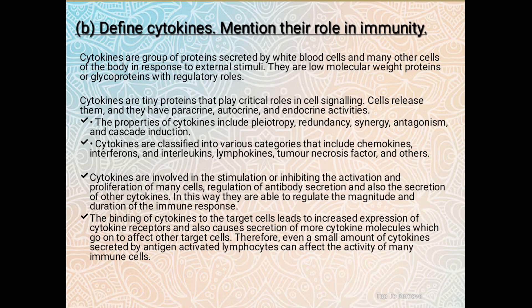The next question is: define cytokines and mention their role in the immune system. Cytokines are proteins secreted by white blood cells and many other cells of the body in response to external stimuli. These are low molecular weight proteins or glycoproteins with a regulatory role. Examples include tumor necrosis factor, interferon, and interleukins. They can activate B cells, T lymphocytes, and phagocytes.